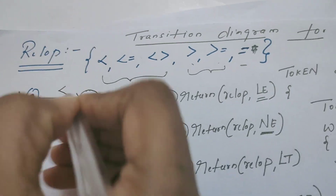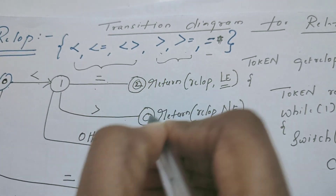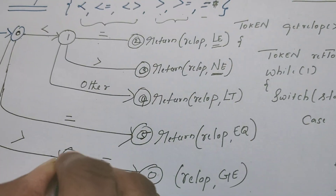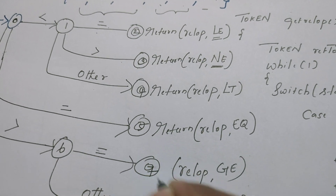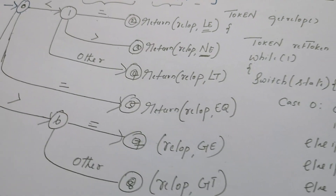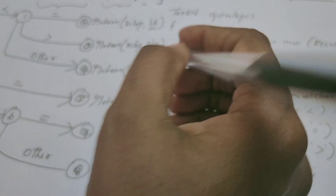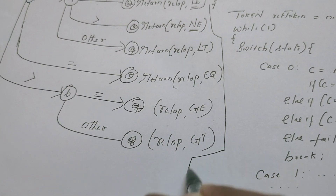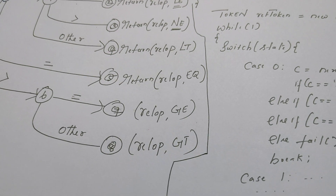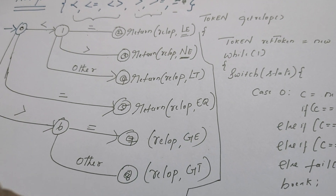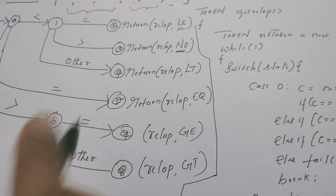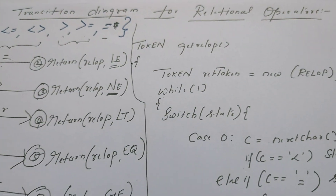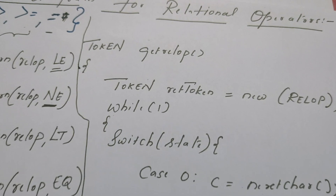Let the start state be zero. The subsequent states are one, two, three, four, five, six, seven, and eight. Now we have seen how to design the transition diagram to recognize the tokens for relational operators. We are going to see the simulation, or the implementation, of this transition diagram.